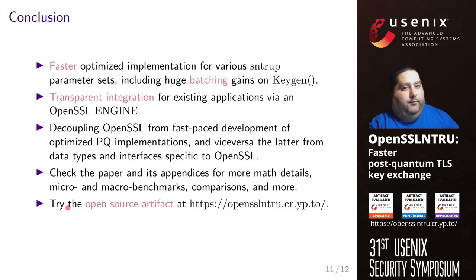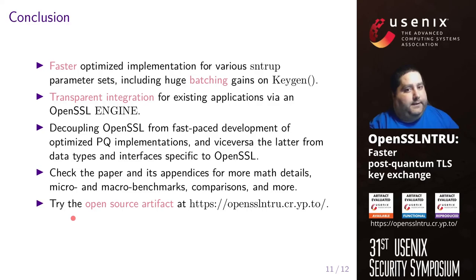In conclusion, we provided with OpenSSL in True a faster optimized implementation for various SNTRUP parameter sets, including huge batching gains on keygen. We also achieved a transparent integration for existing applications via an OpenSSL engine, decoupling OpenSSL from the fast-paced development of optimized post-quantum implementations, and the latter from data types and interfaces specific to OpenSSL. We invite you to check the paper and its appendices for more mathematical details, micro and macro benchmarks, comparisons, and more. Please also try the open source artifact released at the URL shown on the slide. Thank you for your attention.